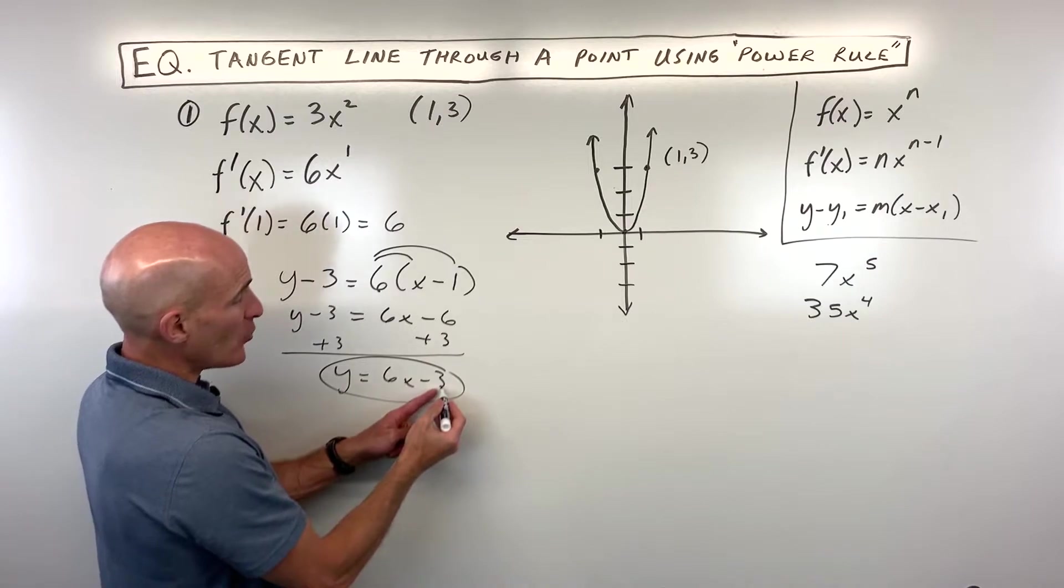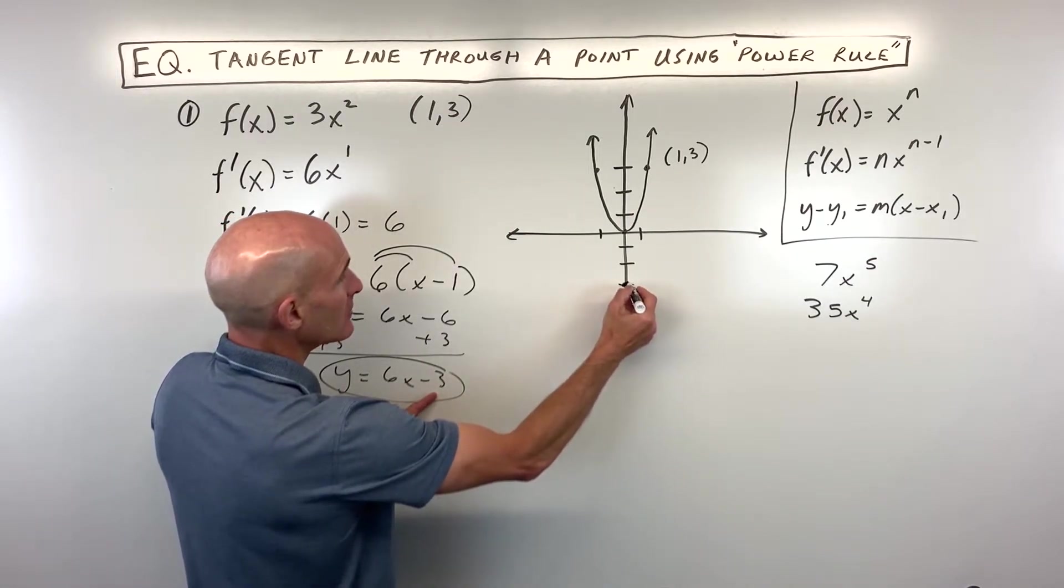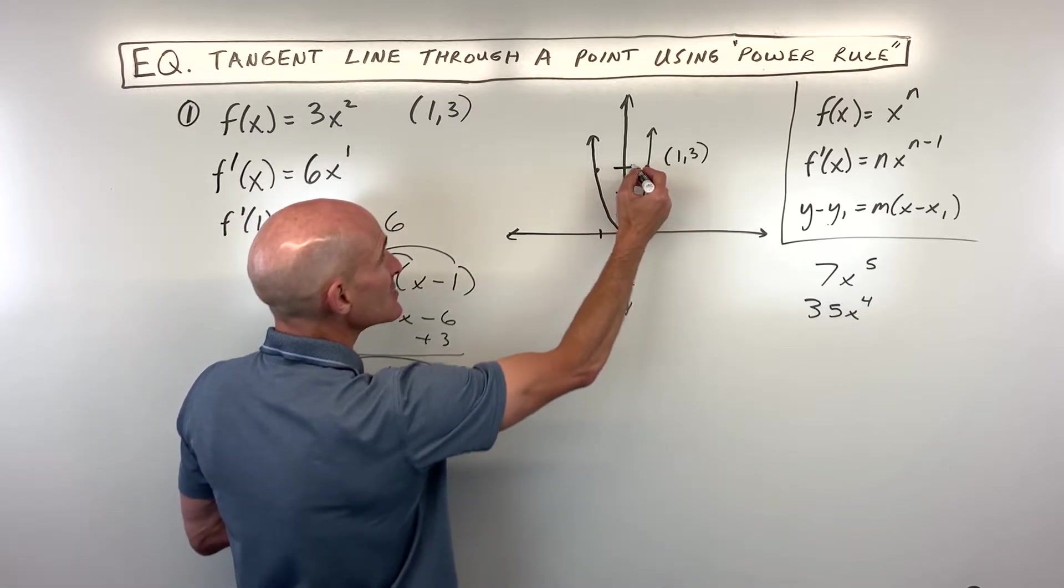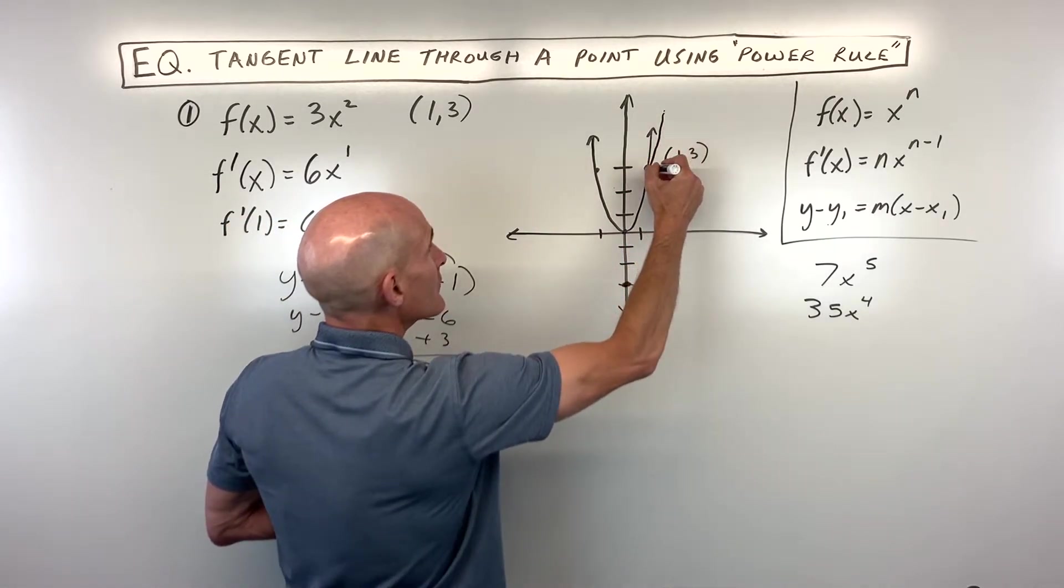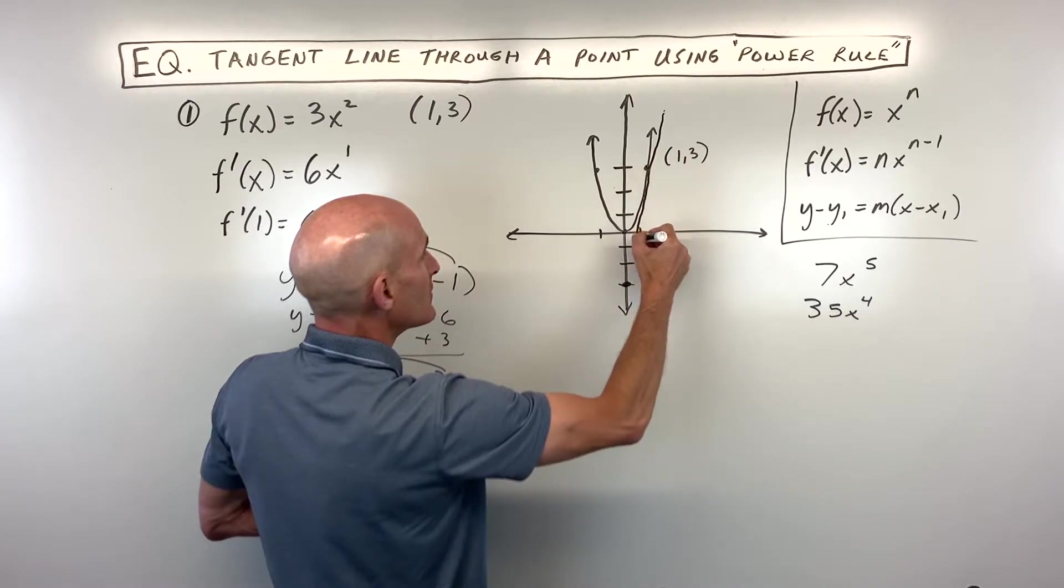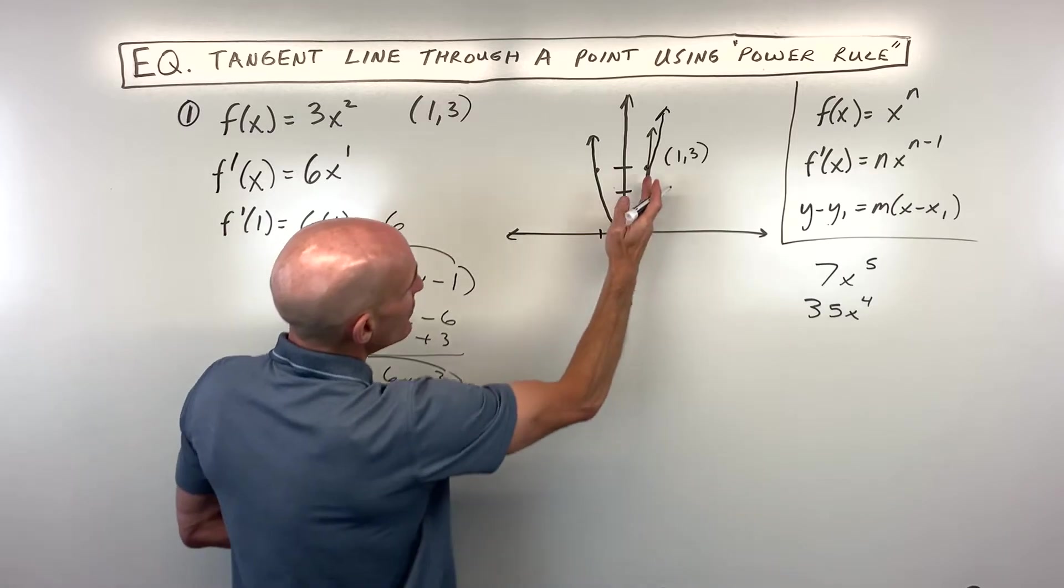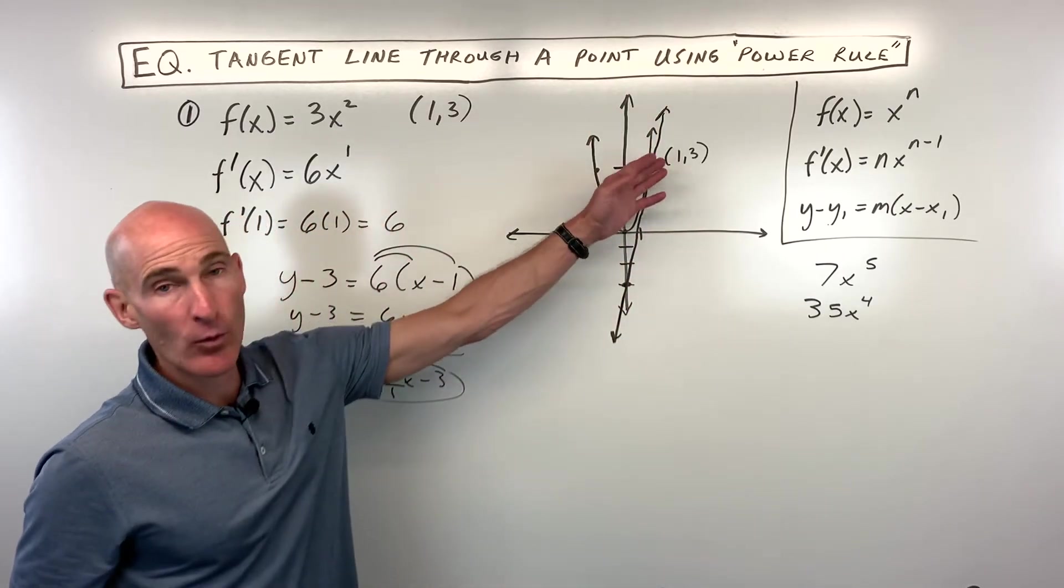Let's go ahead and graph it here. The y-intercept is negative 3. The slope is 6, which is like 6 over 1, so rise 6, run 1. You can see that this graph of our tangent line is going to look something like this approximately. It just barely touches the curve at that one point at (1, 3).